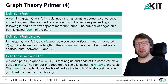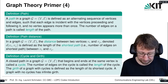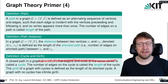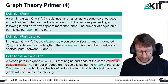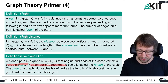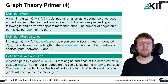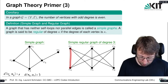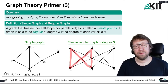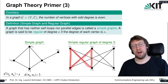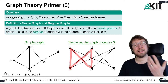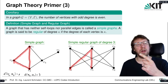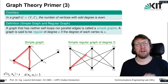A cycle is a closed path in the graph — a path that begins and ends at the same vertex. The number of edges is the length of the cycle. For example, starting at V4, going to V1, V5, V2, back to V4 is a cycle of length 4. Going from V2 to V1 to V3 back to V2 is a cycle of length 3.